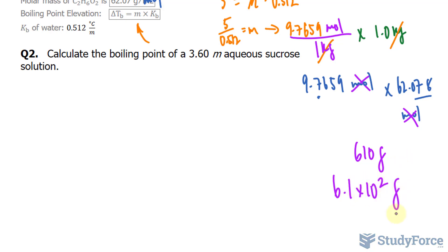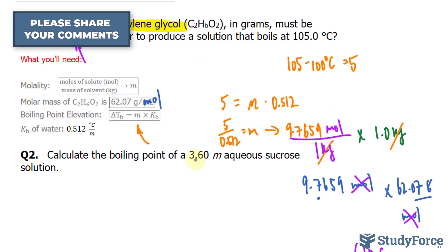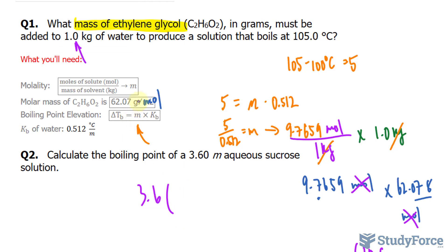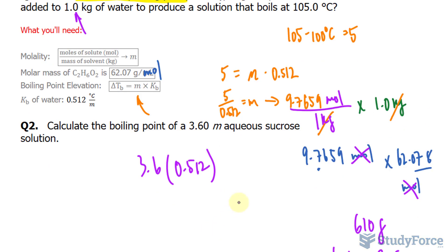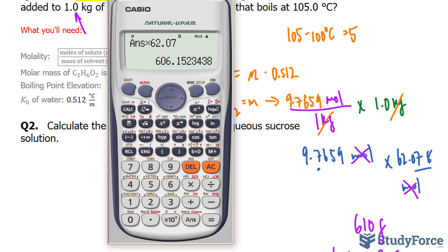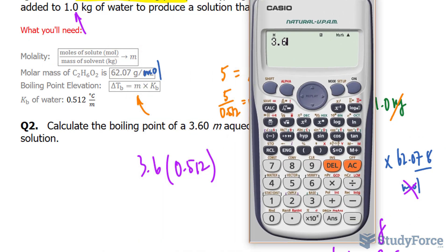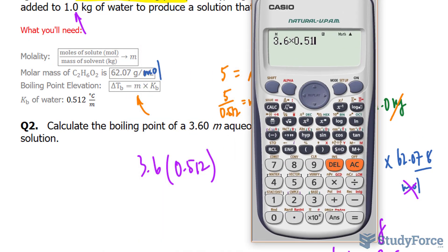Question two reads: calculate the boiling point of a 3.60 molal aqueous sucrose solution. This is actually quite easy — all we do is take 3.6 and multiply it by the constant 0.512. That will cancel out the units, giving us degrees Celsius. So 3.6 times 0.512.